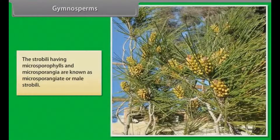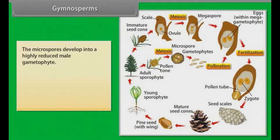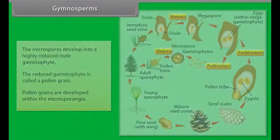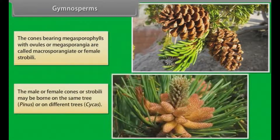The strobili having microsporophylls and microsporangia are known as microsporangiate or male strobili. The microspores develop into a highly reduced male gametophyte called a pollen grain. Pollen grains are developed within the microsporangia. The cones bearing megasporophylls with ovules or megasporangia are called megasporangiate or female strobili. The male or female cones or strobili may be borne on the same tree, as in Pinus, or on different trees, as in Cycas.